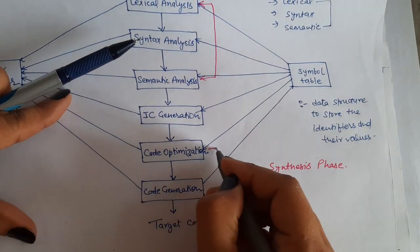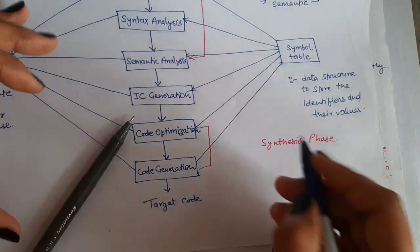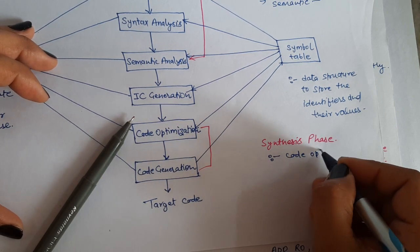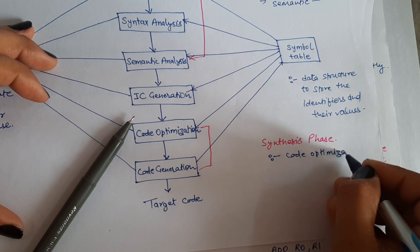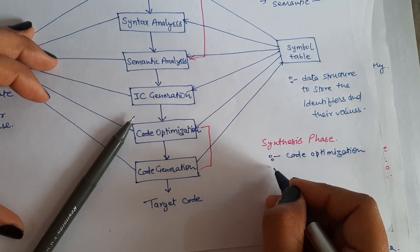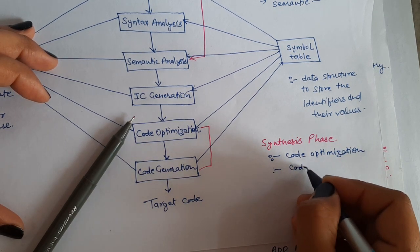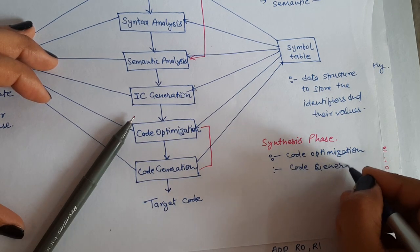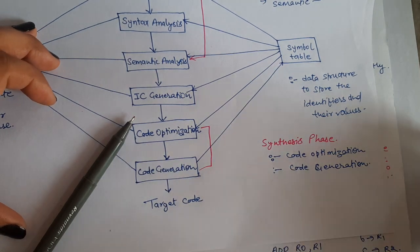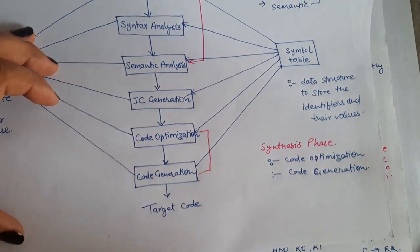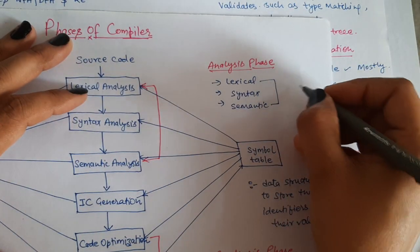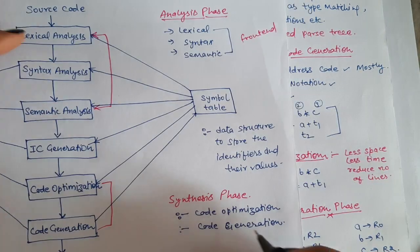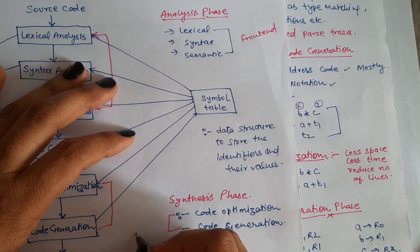Similarly, the code optimization and code generation phase, these two make the synthesis phase. Synthesis phase is more dependent on machine and less dependent on your source code, because this phase is writing code for the machine, not for the source language. So analysis phase is also known as front end and synthesis phase is also known as back end.